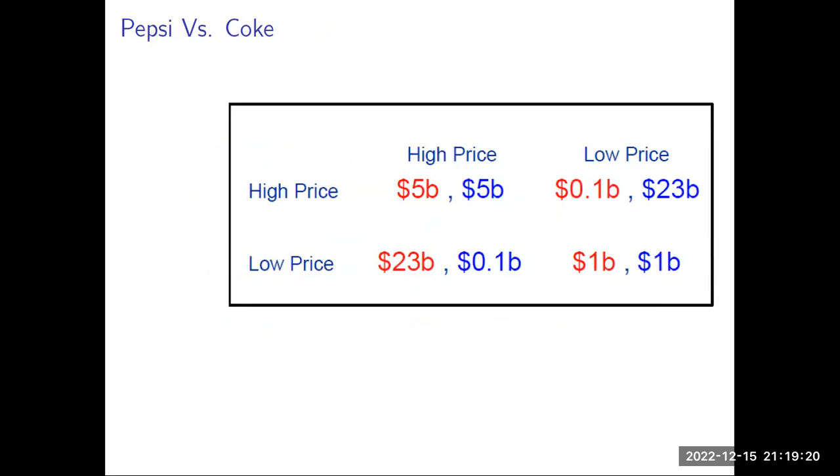To understand the rationality concept, look at this example. There are two firms selling beverages in the market. If we assume there are two firms, Pepsi and Coke, and if Pepsi increases its price, because the products they sell are substitutes to each other, if Pepsi increases its price and Coke does not increase its price, Pepsi loses.